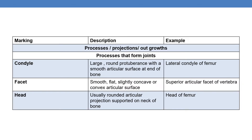Now coming to processes, projections, or outgrowths. We will first discuss processes that form joints. The first type is condyle — a large, round protuberance with a smooth articular surface at the end of a bone. An example is the lateral condyle of the femur.